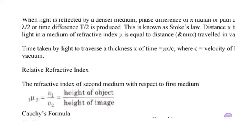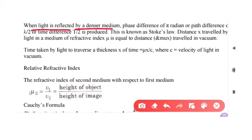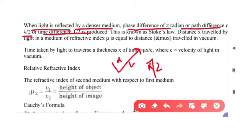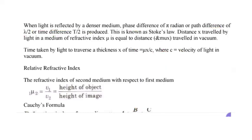There is one more important law that I almost skipped — I am really sorry for that. It is called Stokes' law. Stokes' law states that when light is reflected by a denser medium, a phase difference of pi radians or a path difference of lambda/2 is produced. So when a light ray is reflected from a denser to a rarer medium, the phase difference is pi/2 and the time difference is T/2. Wherever this condition is fulfilled, Stokes' law applies.